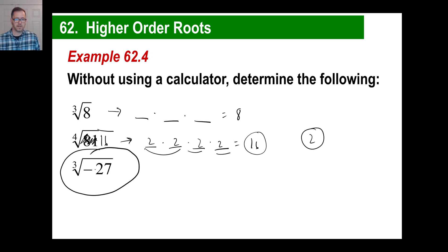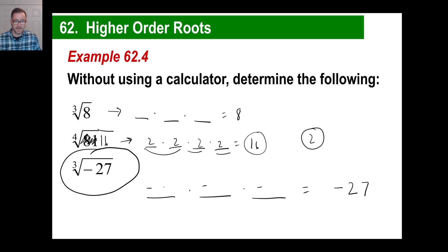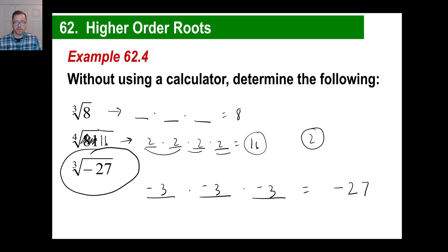Here's where it gets funky — the cube root of negative 27. You need something times something times something to give you negative 27. The answer has to be negative, because positive×positive×positive can't give a negative. Try negative 3: negative 3 × negative 3 = positive 9, and positive 9 × negative 3 = negative 27. So the cube root of negative 27 is negative 3.